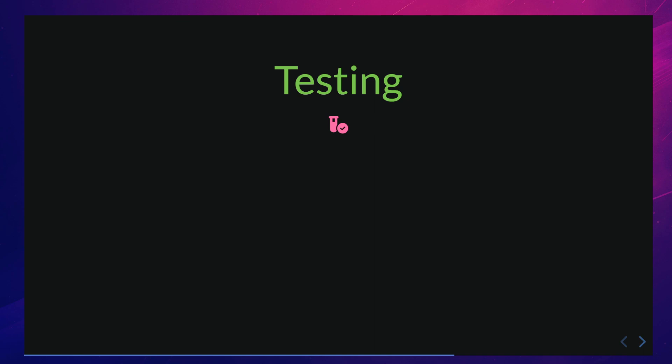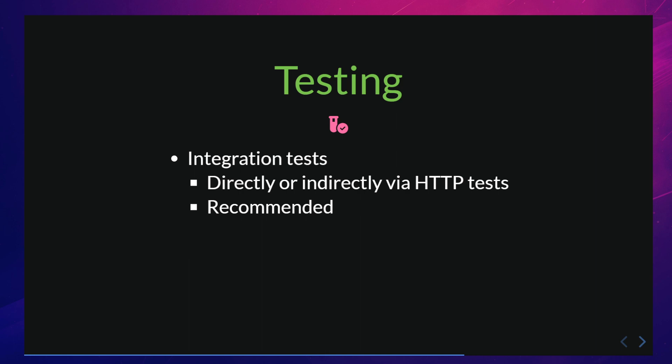Testing a repository that uses a query builder can be done in a few different ways, depending on the specific implementation and the testing framework being used. One way is to write integration tests — creating test cases for each of the methods in the repository or by implementing an HTTP test. Before the test runs, test data can be inserted into the affected database tables, then an HTTP request is made to your application to verify that the correct results are returned. Another way is to use mocking techniques, though I would not recommend mocks because you are not actually testing the real queries you are deploying to your server, and too much mocking will make your tests harder to understand and maintain in the long run.